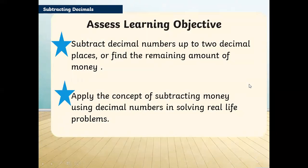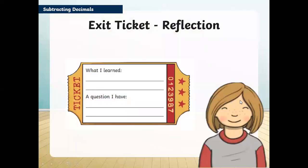Let's assess our learning objectives. We were able to subtract decimal numbers up to two decimal places or find the remaining amount of money, and you were able to apply the concept of subtracting money using decimal numbers in solving real life problems. In the end, I'd like you to think about the reflection. What exactly did you learn? Do you have a question in your mind? Take the exit ticket, and if you have any confusions or doubts, don't hesitate to write to me. With this, we come to an end with our lesson. I hope you enjoyed. I'll see you next time with another recorded lesson. Take care and bye-bye.